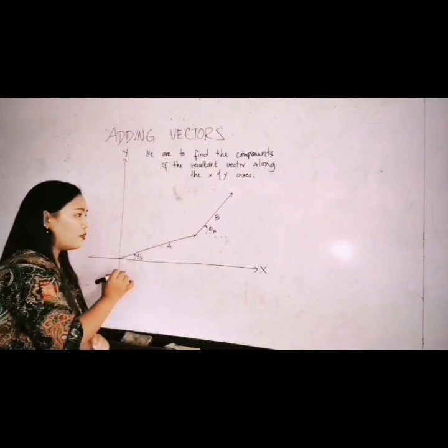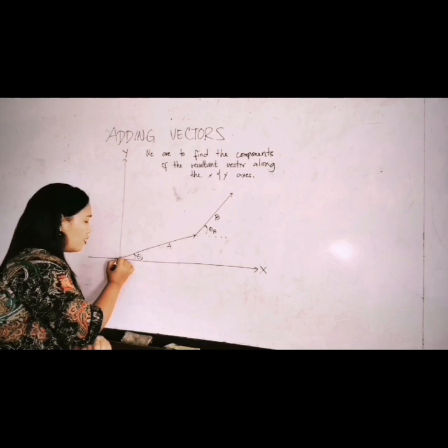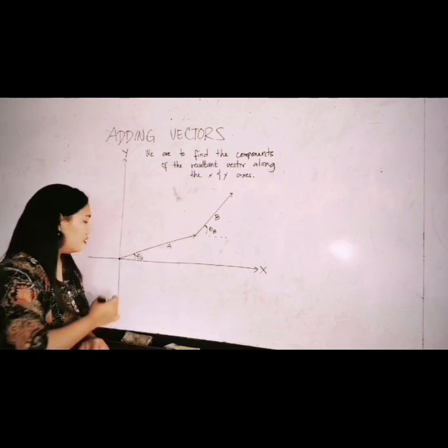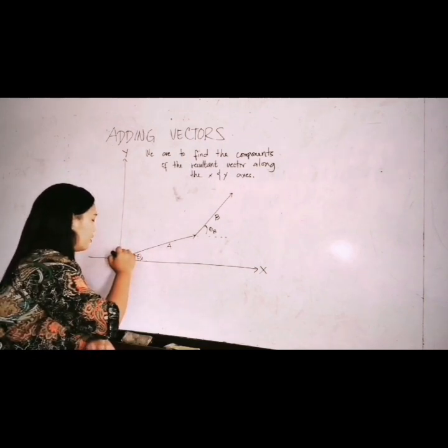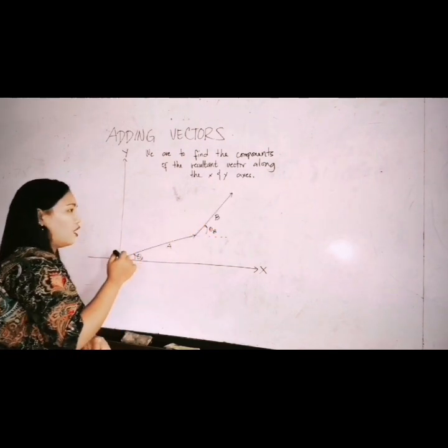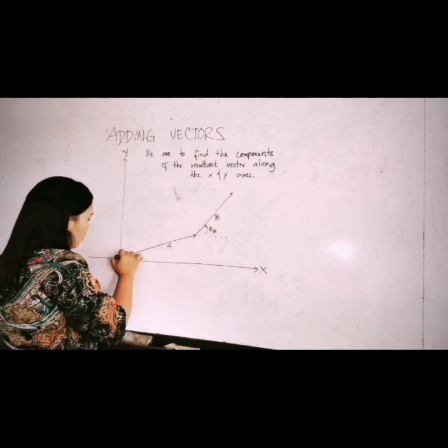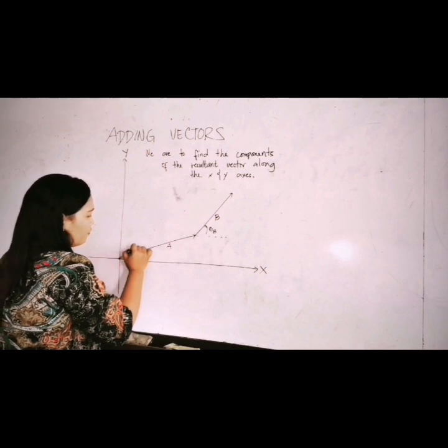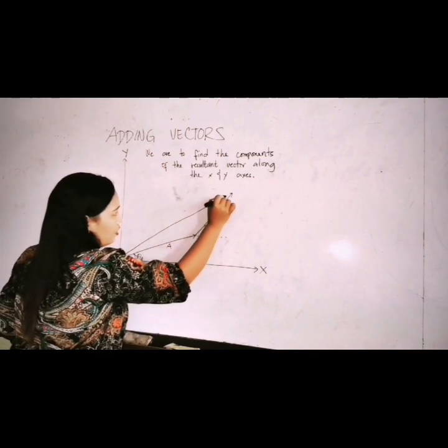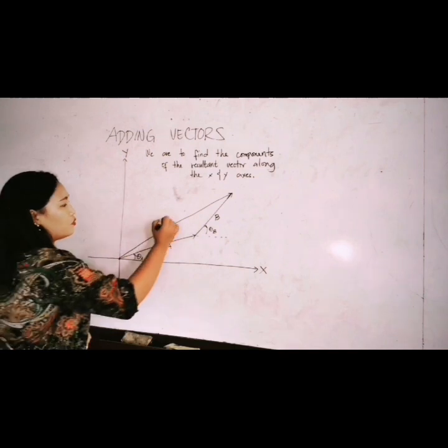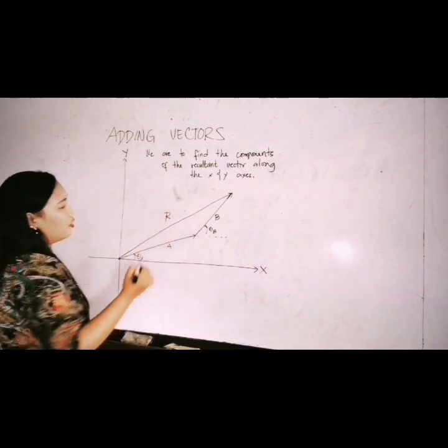So let's say the starting point is at the origin. And the end point is here, the head of vector b. So we can write a straight line from the starting point to the end point, and that's our resultant vector. We can write r.